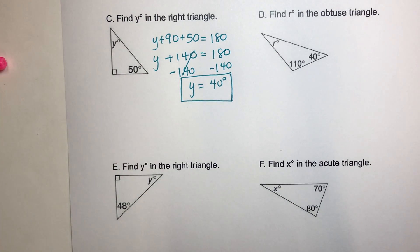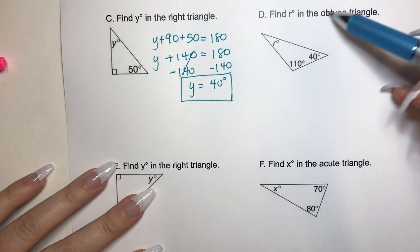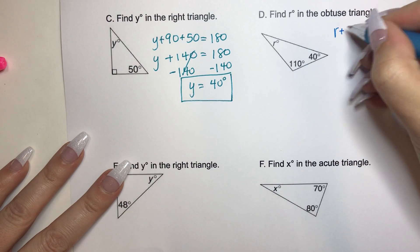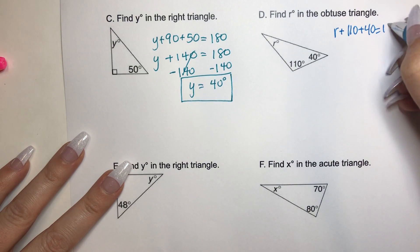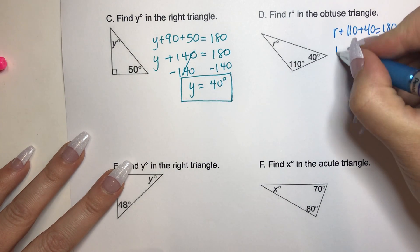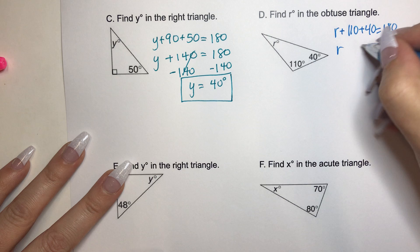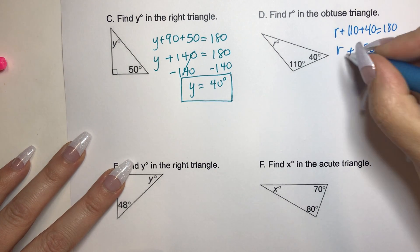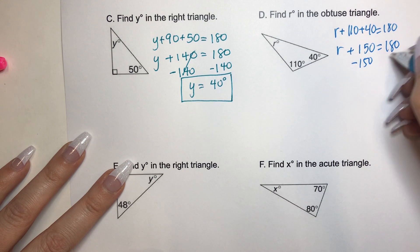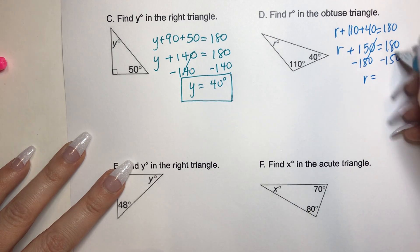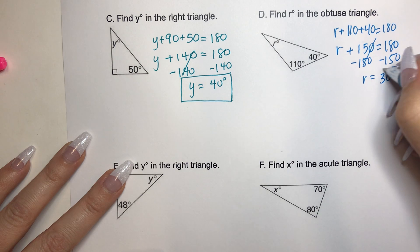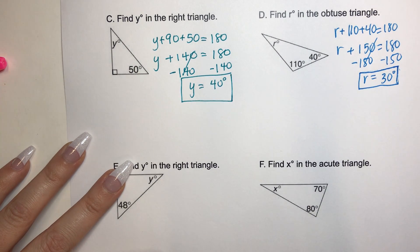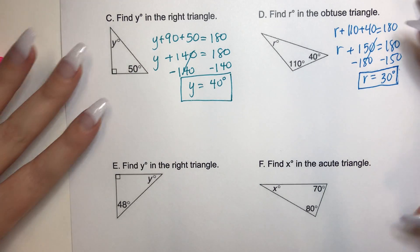All right, we are back. Let's see how you did. So it says find R in this obtuse triangle. So we're going to add up all these measures. R plus 110 plus 40 equals 180. We simplify. R plus 110 plus 40 is 150. And then we have to get R by itself, so we do the subtraction property of equality. That cancels. We're left with 30 degrees. If you got that one right, great job.